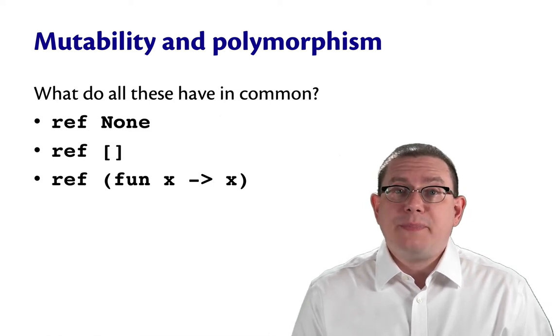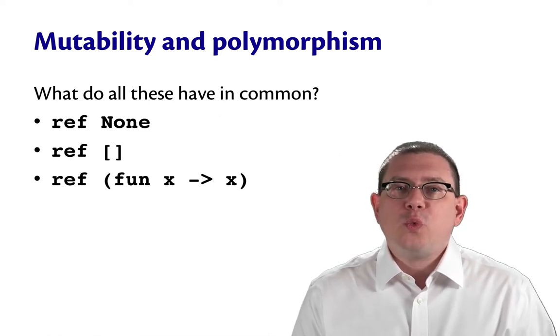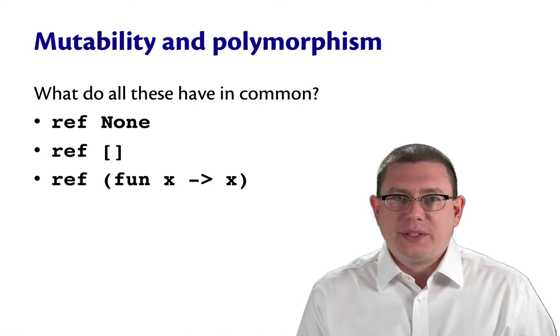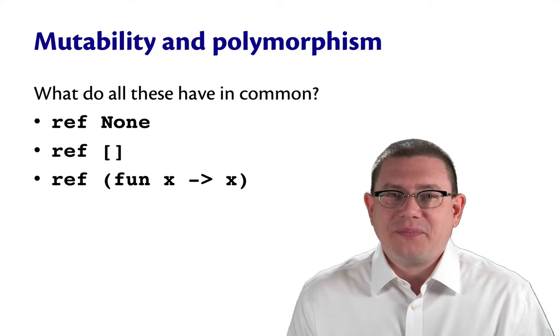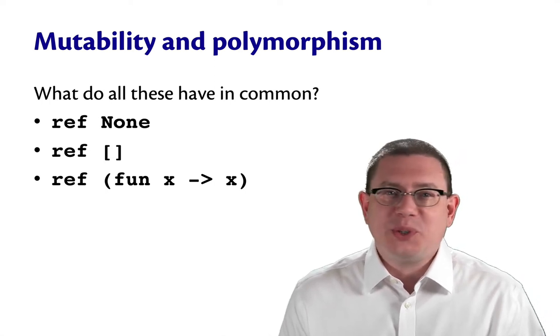Before we leave the topic of type inference and polymorphism, there is one more complication we need to discuss. It has to do, unsurprisingly, with mutability. Mutability always makes your life worse.